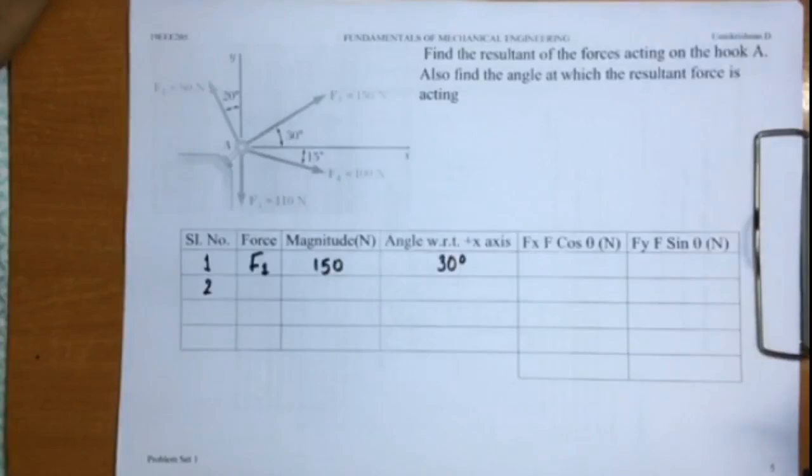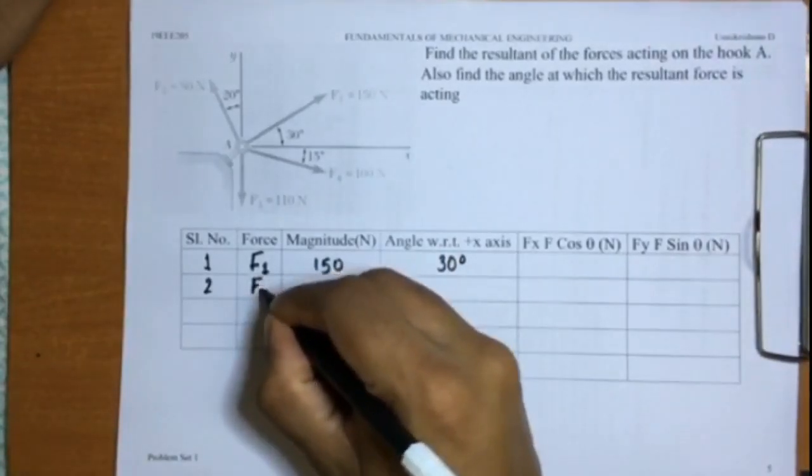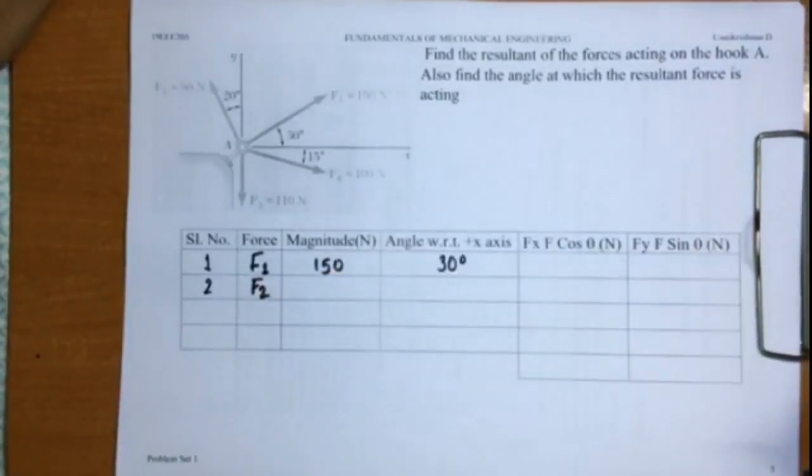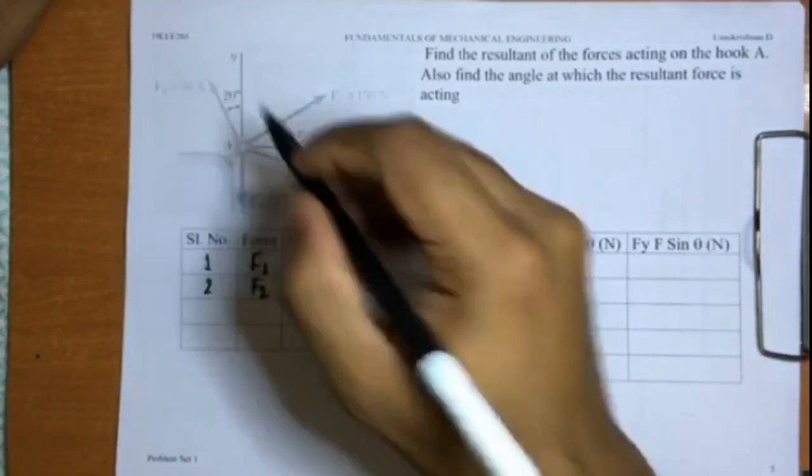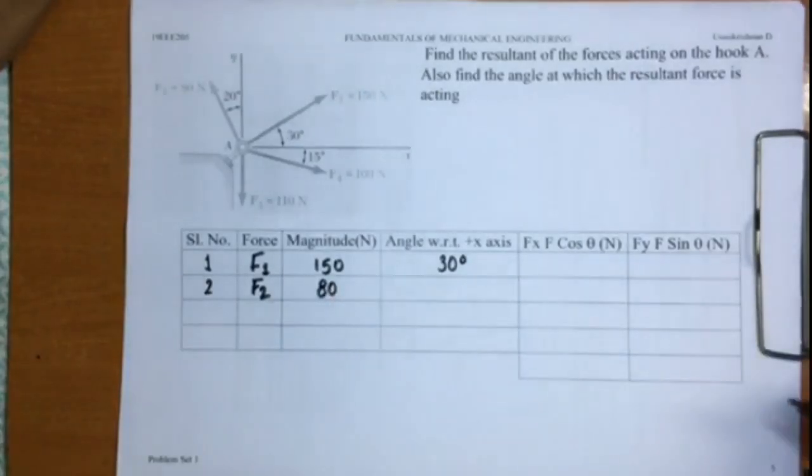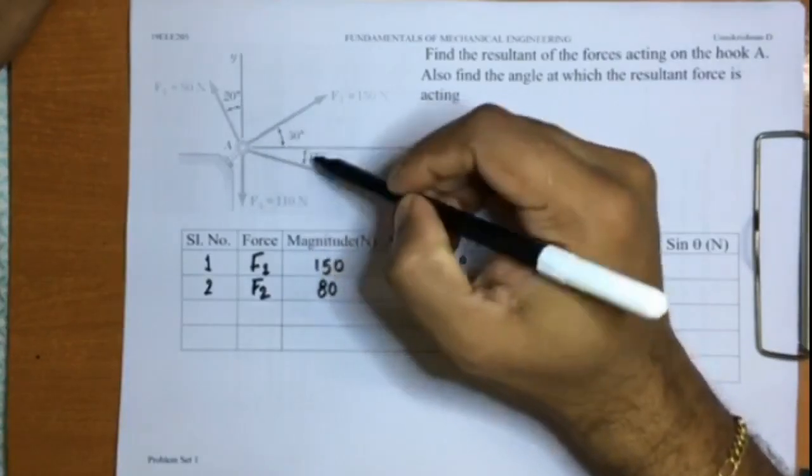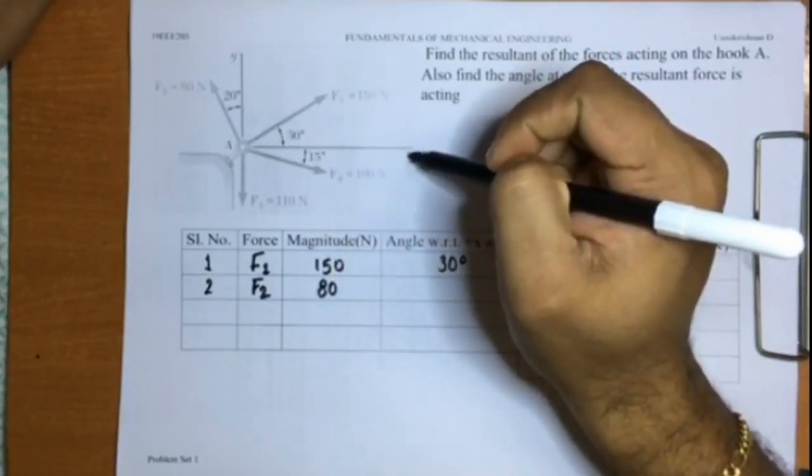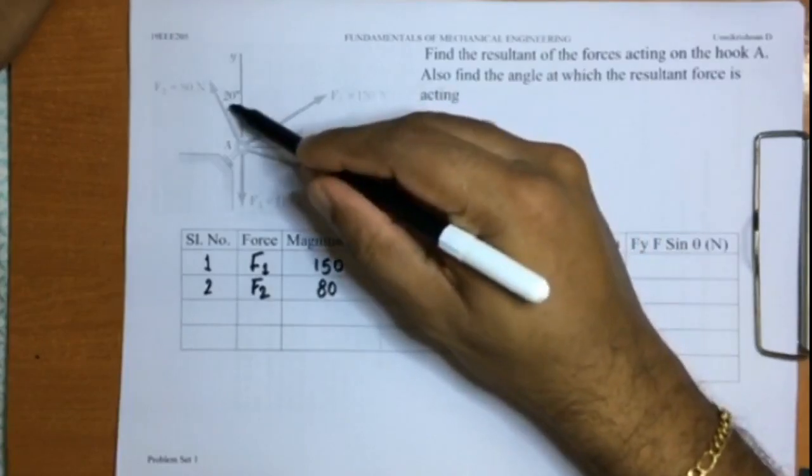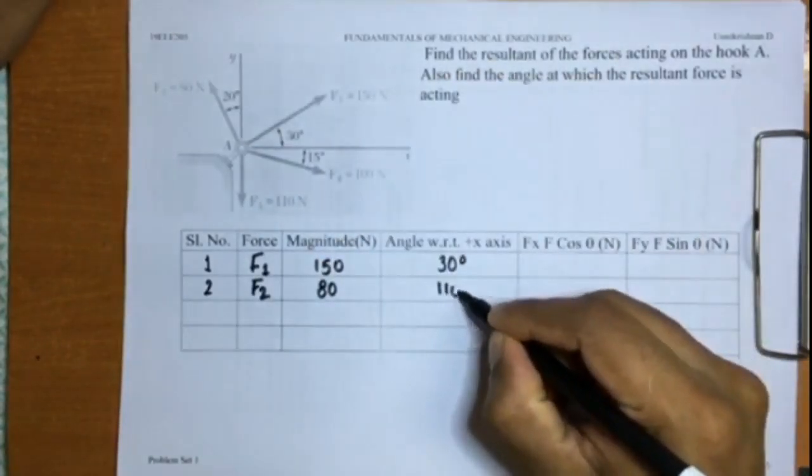Serial number two is F2. Let us see how much is the magnitude. The magnitude is given as 80 newtons. And the angle, if you see here, it is 20 degrees with respect to the positive y-axis. From the x-axis, it is 90 plus 20, so it is 110 degrees.